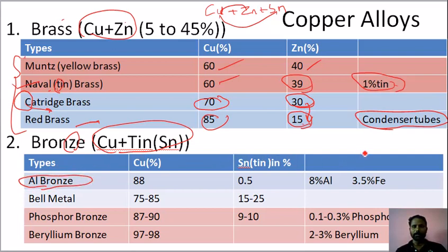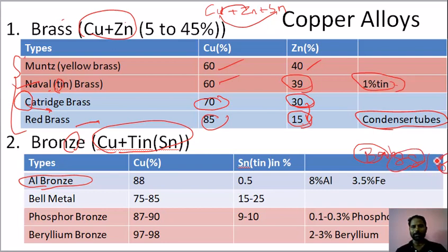Now let's look at Babbitt metal. Babbitt — B, A. It's 88, 8. In Babbitt, it's 88% tin, 8% antimony. That's why we have aluminum brass — B, A.